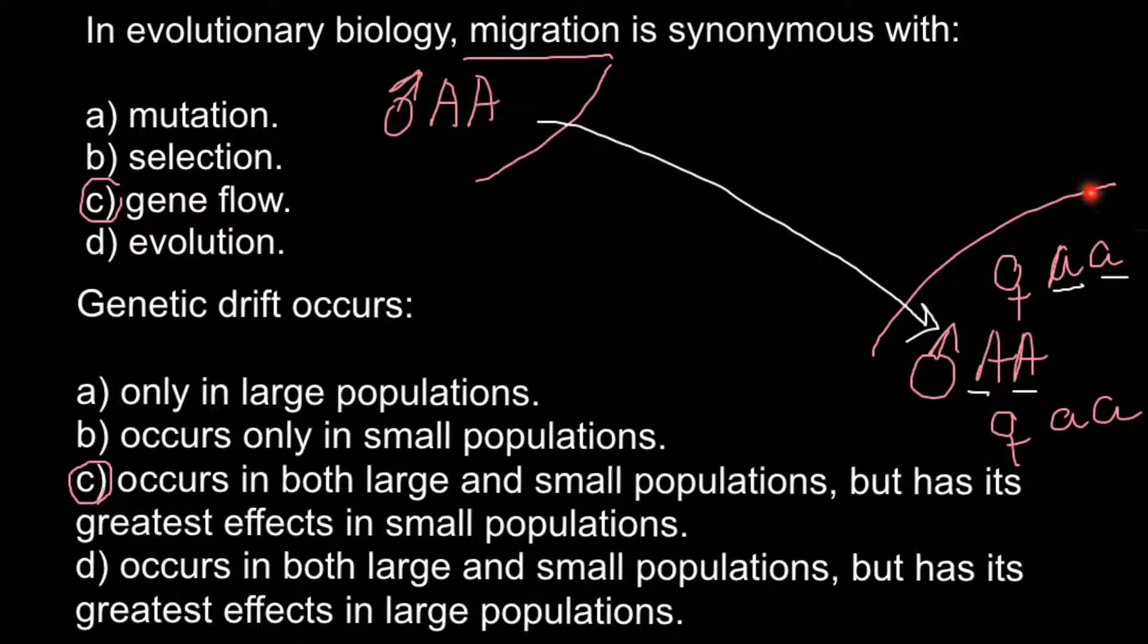So you see that the bigger this community, the greater number of individuals here, the least influence would be of the gene flow. So that means that both migration affects large and small populations, but on small populations, migration has greater effect, or genetic drift as a result of migration.